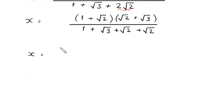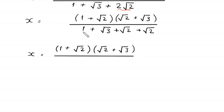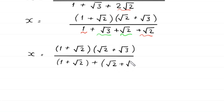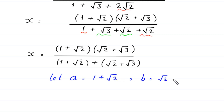Next, x is equal to (1 plus square root of 2) times (square root of 2 plus square root of 3), divided by: we make a group of this 1 and this square root of 2, so (1 plus square root of 2) in parentheses, plus another group (square root of 2 plus square root of 3). Now we let a equal 1 plus square root of 2 and b equal square root of 2 plus square root of 3. Substituting a and b, this equation becomes x equals a times b divided by a plus b.